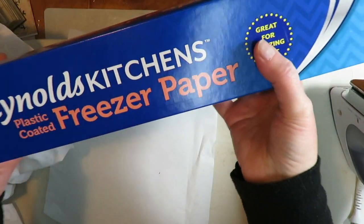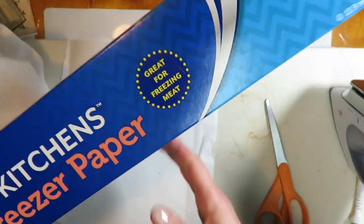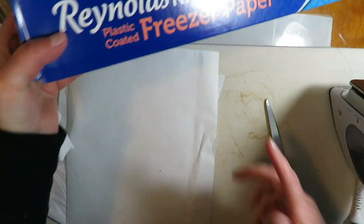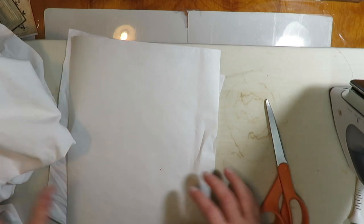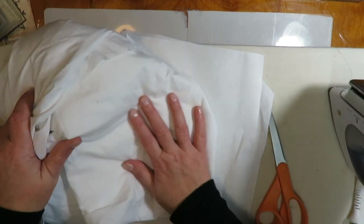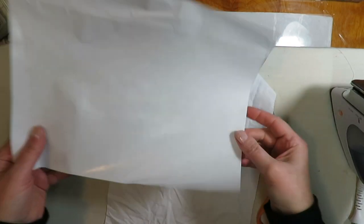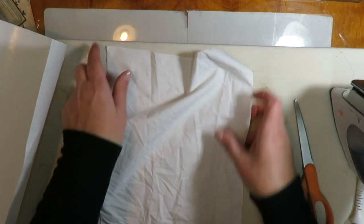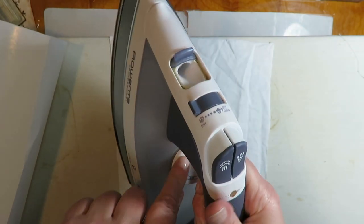You need that and whatever fabric you're going to use. I am using a white cotton sheet that I got at a thrift store. You cut your piece of freezer paper just a little bit bigger than eight and a half by eleven, and the fabric as well.